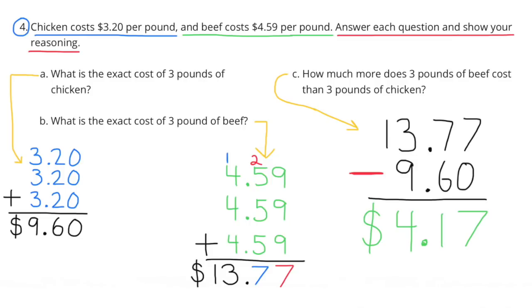Part B: What is the exact cost of three pounds of beef? $4.59 plus $4.59 plus $4.59 equals $13.77. So three pounds of beef at $4.59 per pound comes to a total of $13.77.